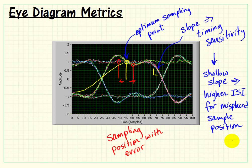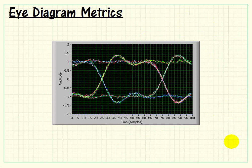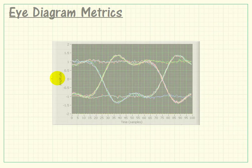Therefore, shallow slope, that means that we've got higher problems with ISI when our sample point is misplaced.